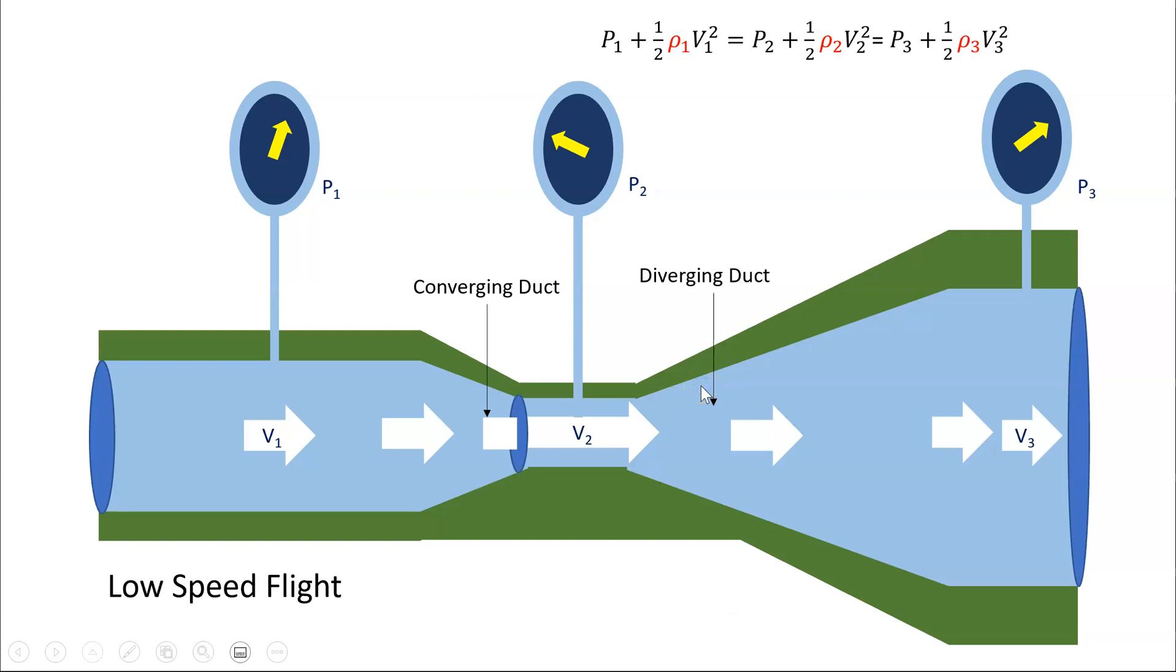Now in low-speed flight, or anything below Mach 0.3 to 0.4, then the density of air is said to be reasonably constant. So we can say that the density is constant between this point, and this point, and this point. So I've replaced rho 1 with rho, rho 2 with rho, and rho 3 with rho.